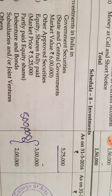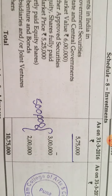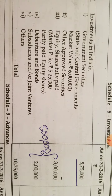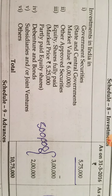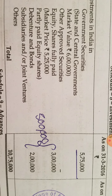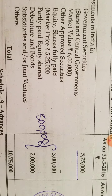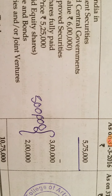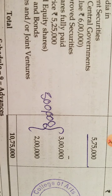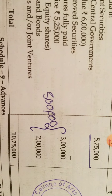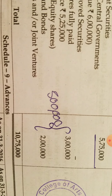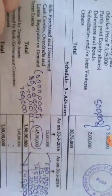Schedule number eight is investments, which is five lakhs seventy five thousand. They have bifurcated the five lakhs amount given to us, so you can write it in a bifurcated way or in a clubbed form. Five lakhs seventy five thousand plus five lakhs will give you ten lakh seventy five thousand.